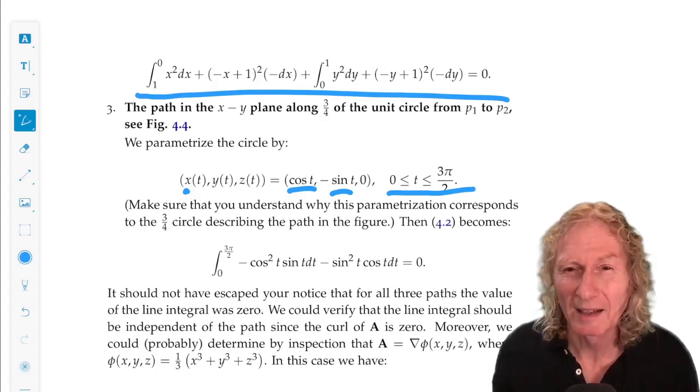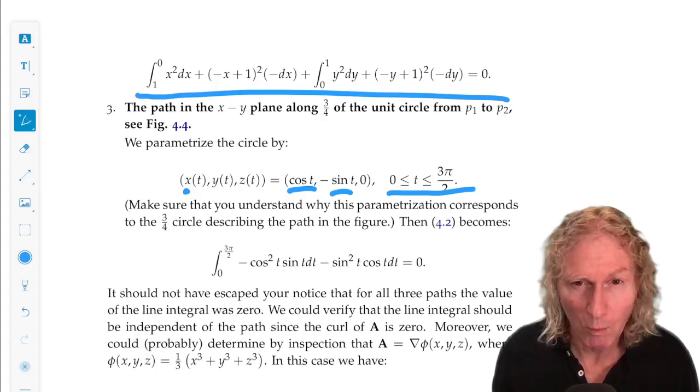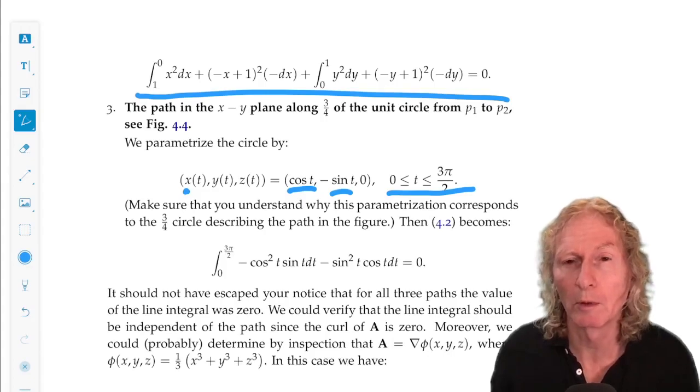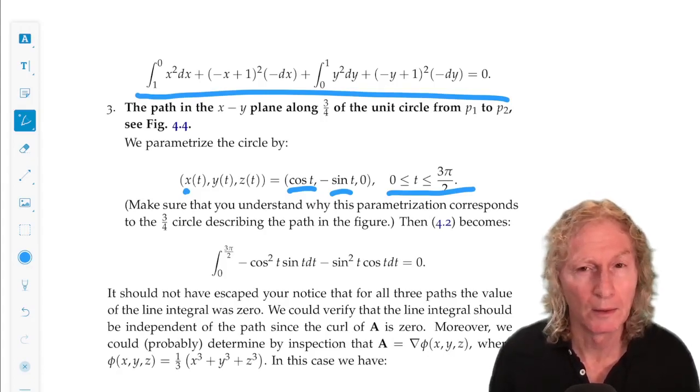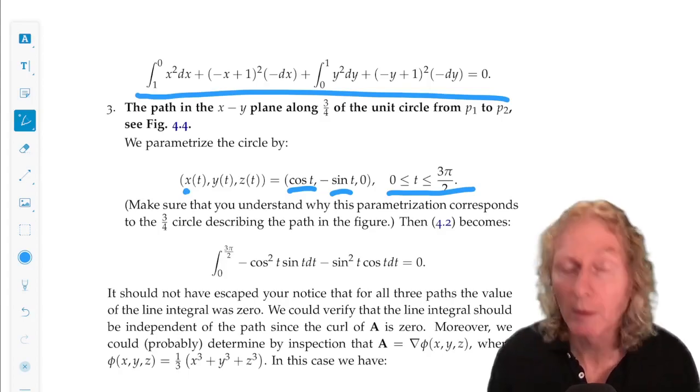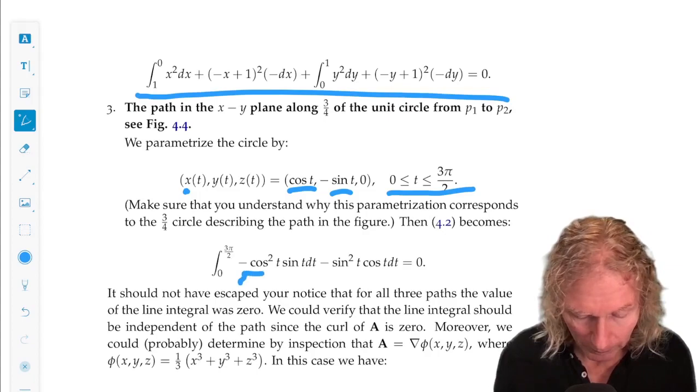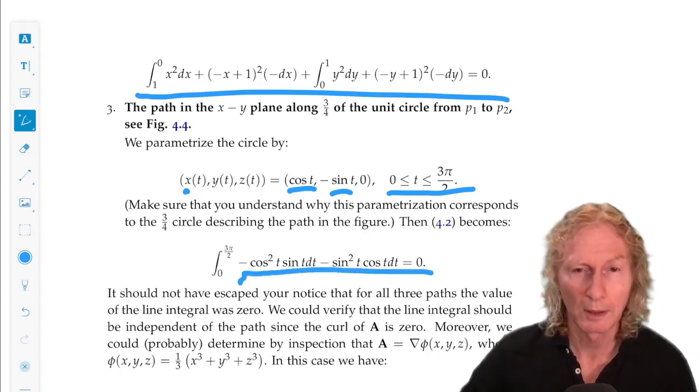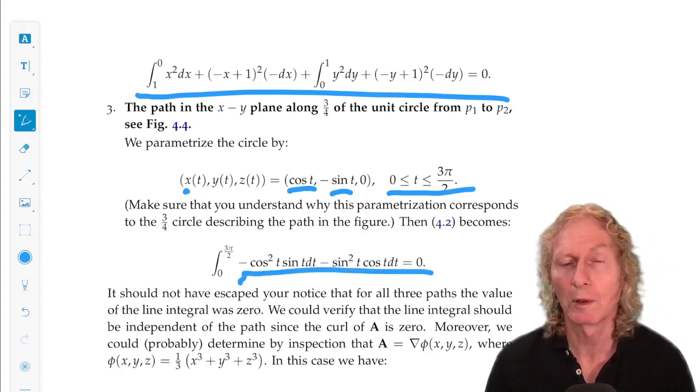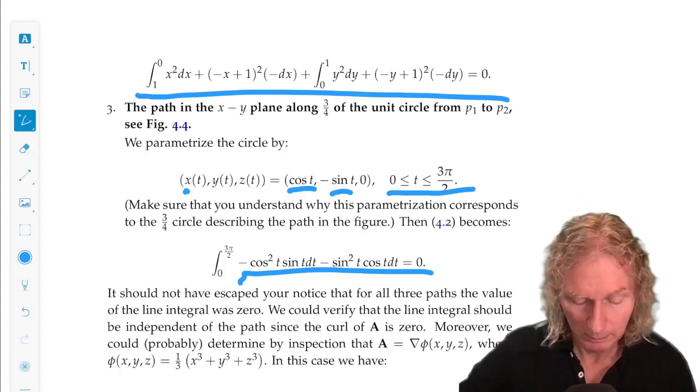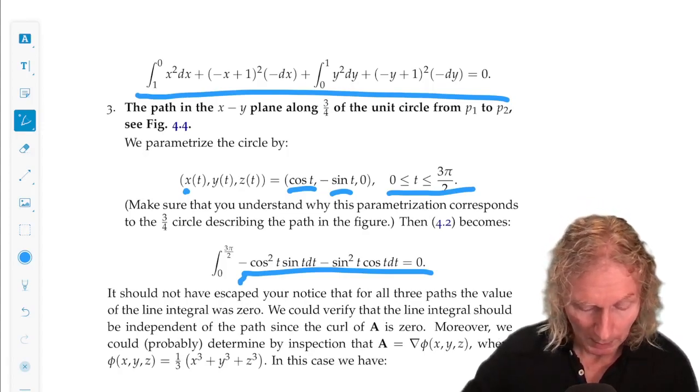And then what about dx and dy? Use the chain rule. So, dx is dx dt, dt, dy is dy dt, dt. So, the path is parametrized in terms of t. And if you plug that into the expression for a dot dr, you're going to get 0 again.